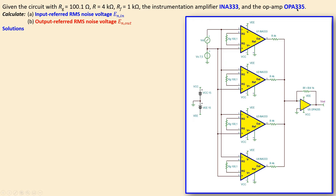We have the instrumentation amplifier INA333 and the op-amp OPA335. That is the output voltage at the end. We want the input RMS noise voltage and also the output RMS noise voltage for this specific case, and we would like to compare that to the previous examples where we didn't have averaging — just one instrumentation amplifier — to see the noise performance improvement.